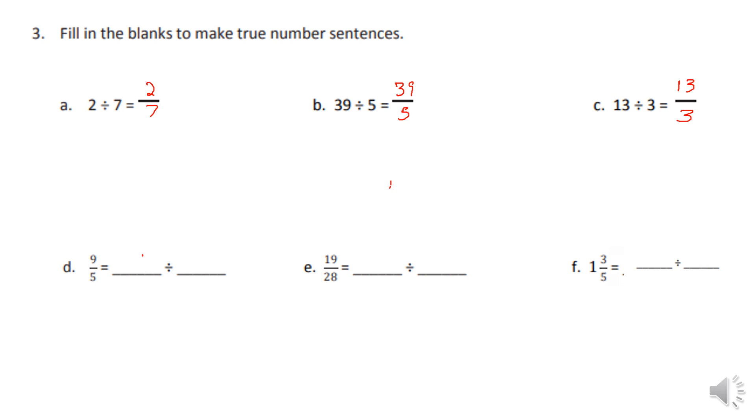9 fifths would actually be 9 divided by 5. 19 28ths would be 19 divided by 28. 1 and 3 fifths equals, now if you look at this, we know 1 could also be written as 5 fifths plus 3 fifths, which equals 8 fifths. So this would also be written as 8 divided by 5.